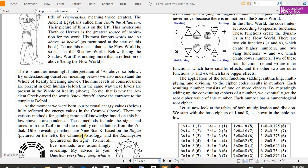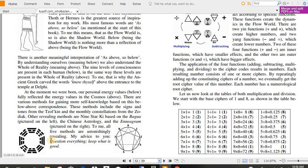Other revealing methods are nine-star chi based on the bagua, pictured on the left, the Chinese astrology, and the enneagram pictured on the right. To me, all five methods are astonishingly revealing. My advice to you, question everything, keep what is good. And that's some good advice.